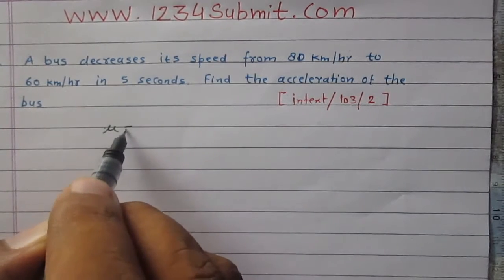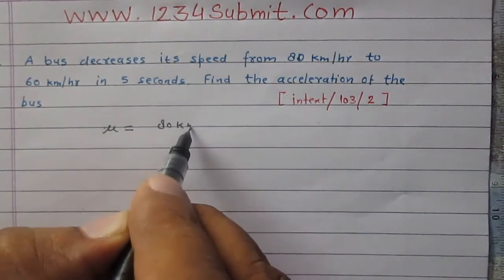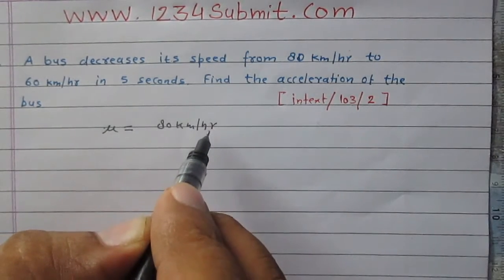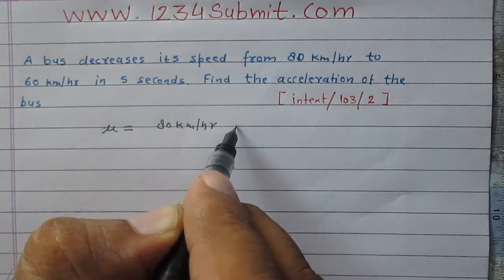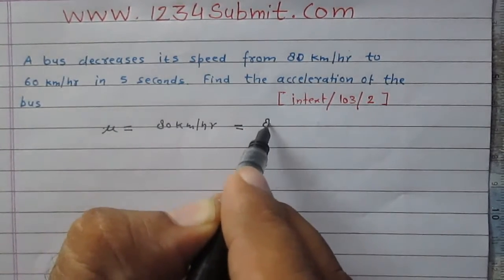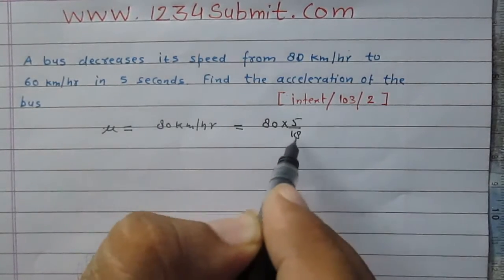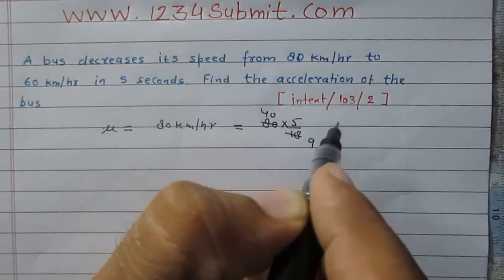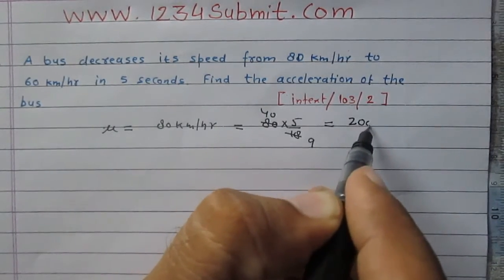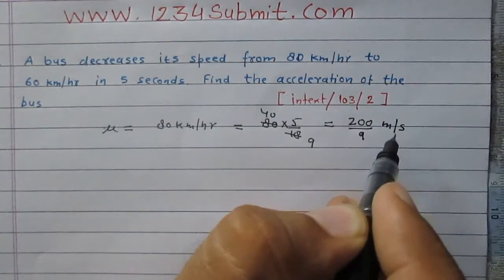I am considering U as the initial speed, which is 80 km per hour. It can be converted into meters per second after multiplying it by 5 by 18. 2 nines are 18, 40 into 2 is 80. So it is 200 divided by 9 meters per second.